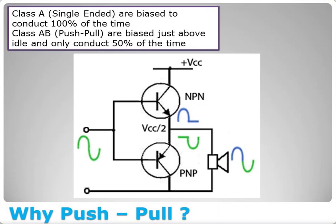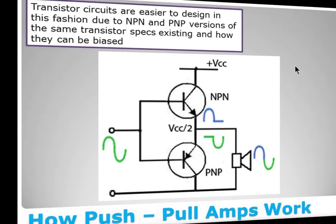If your car ran with the gas pedal floored 100% of the time, the engine would wear out sooner. The same thing happens in a single-ended amplifier — that output tube is conducting all the time, so tube life is shorter. Push-pull amplifiers give much longer tube life, but you need two output tubes instead of one.